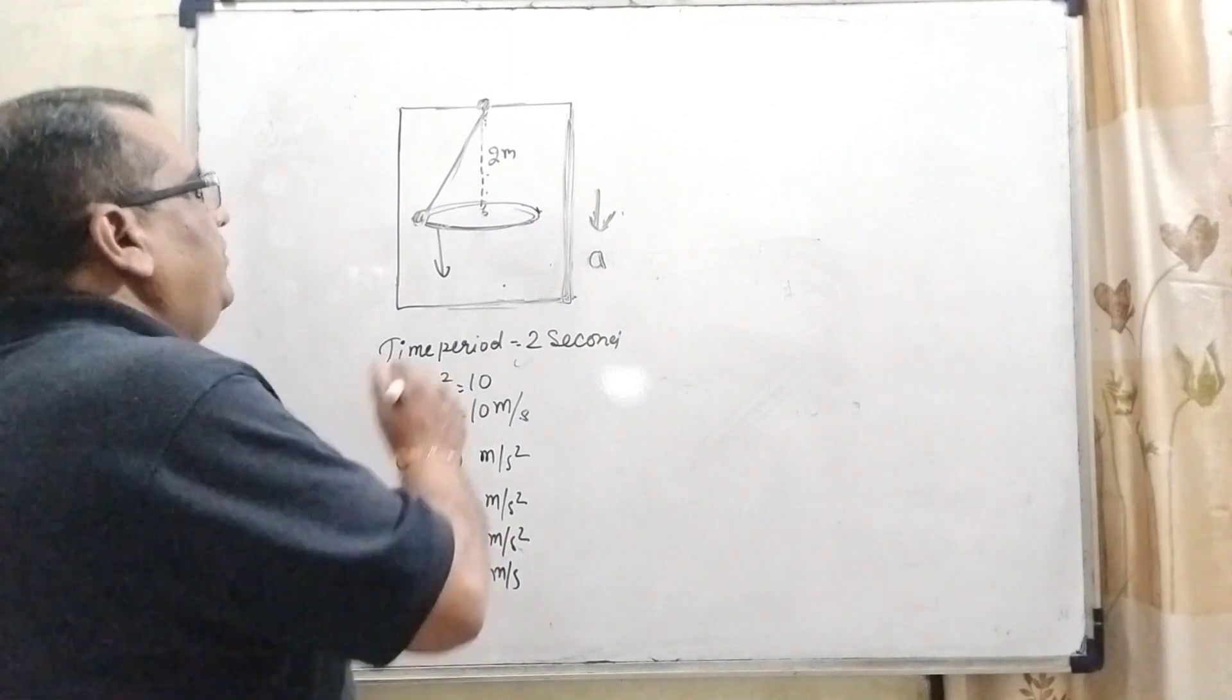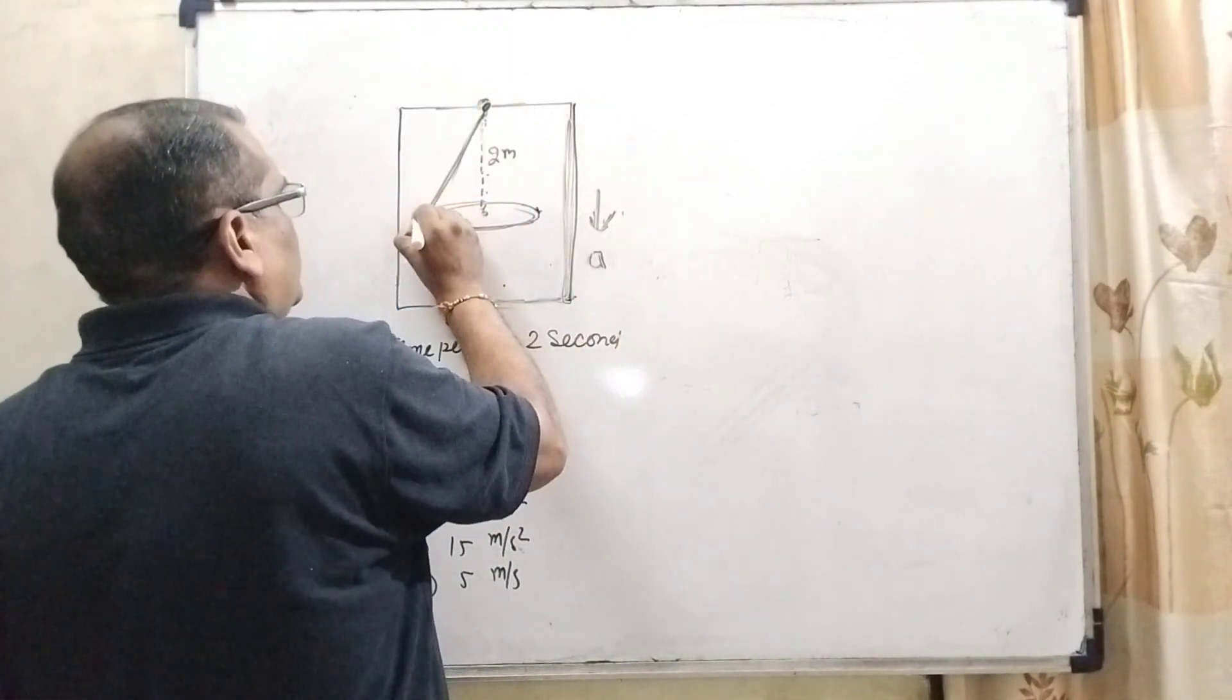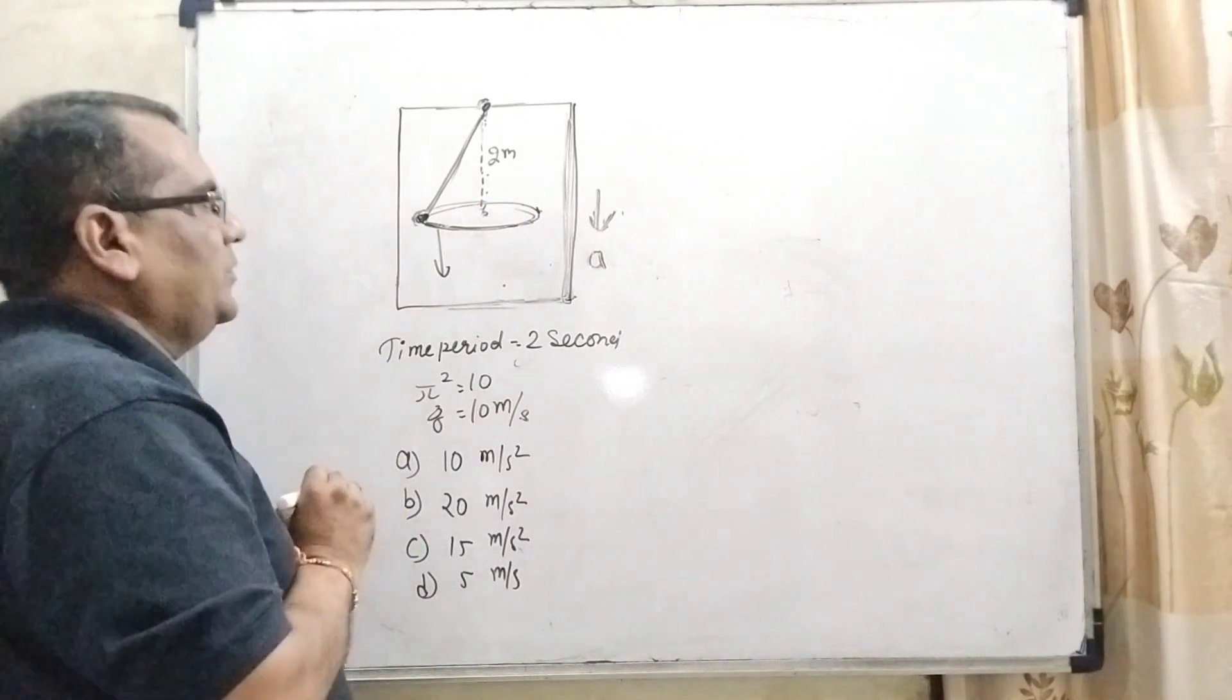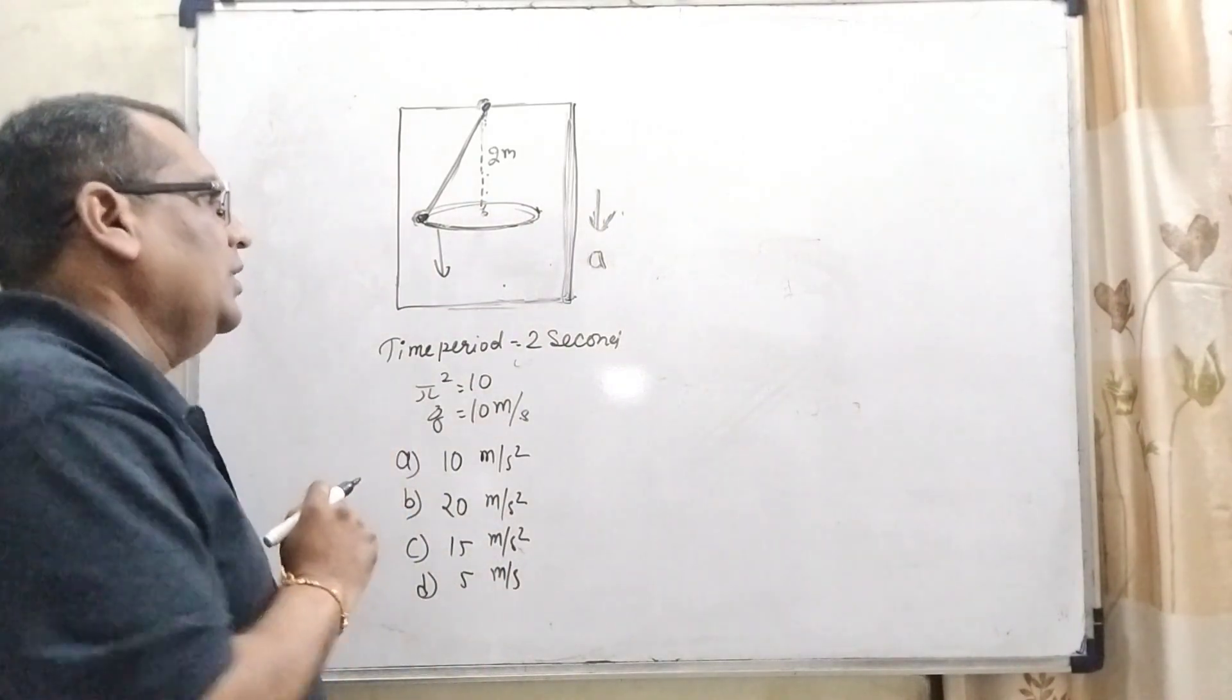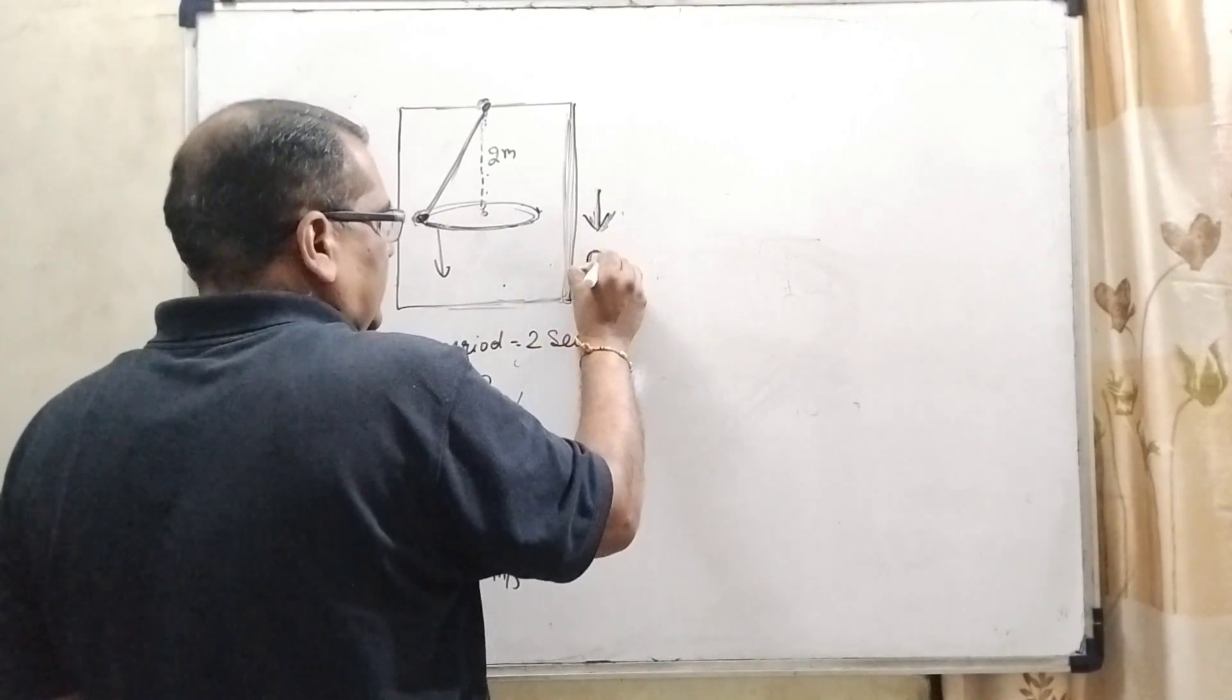In this question, we have given a lift and inside a simple pendulum is moving in circular orbit, a circular path. Here, its direction is downward. So let us consider this acceleration is A.